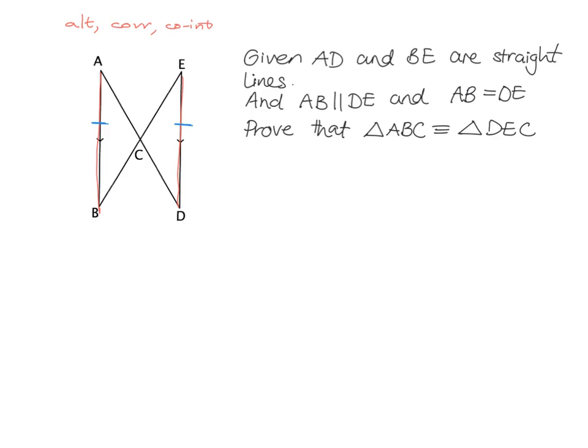Now they're asking us to prove that triangle ABC is congruent to triangle DEC. Those are the two triangles we're talking about — they're quite obvious in this diagram so I don't need to colour them in. Just note that they've asked us to show triangle ABC is congruent to triangle DEC, written in that specific order.